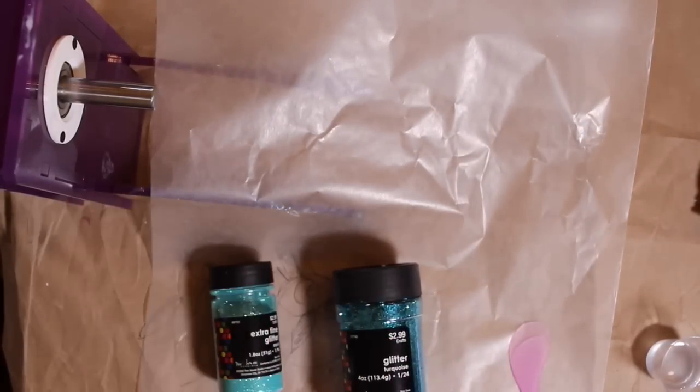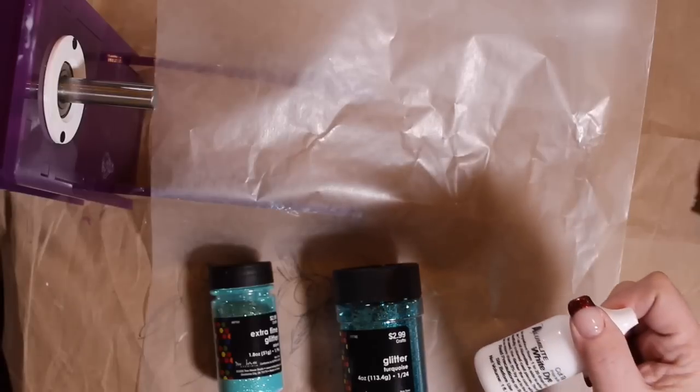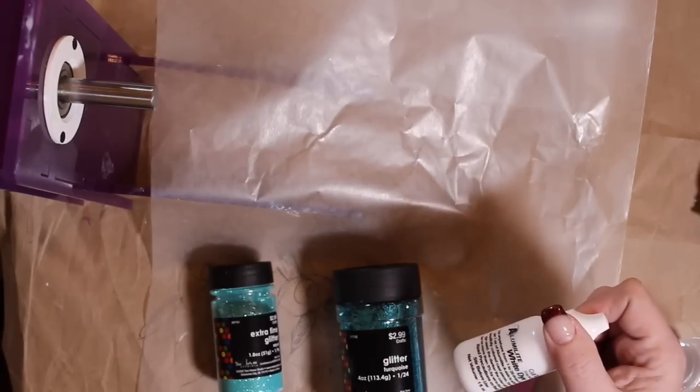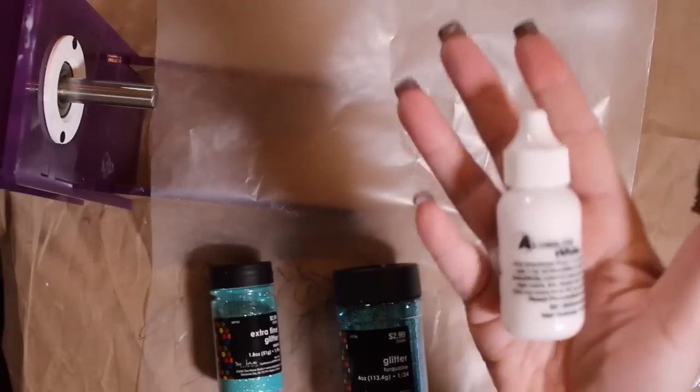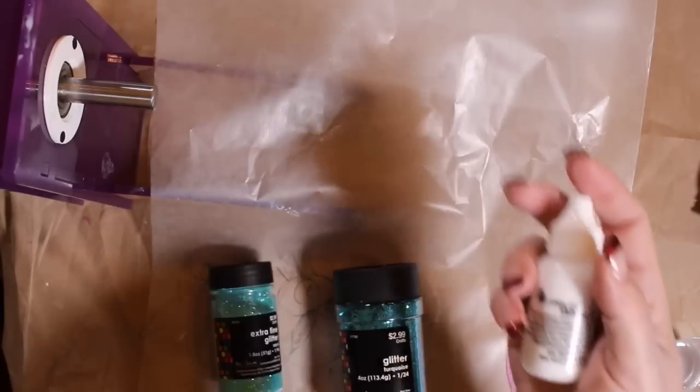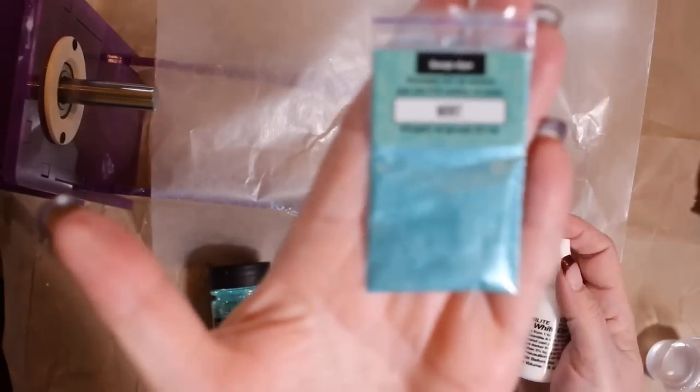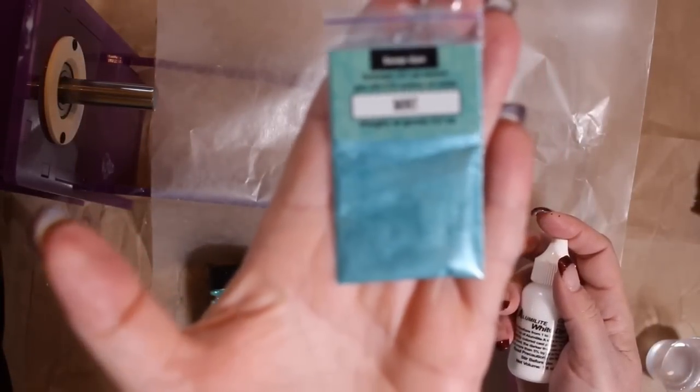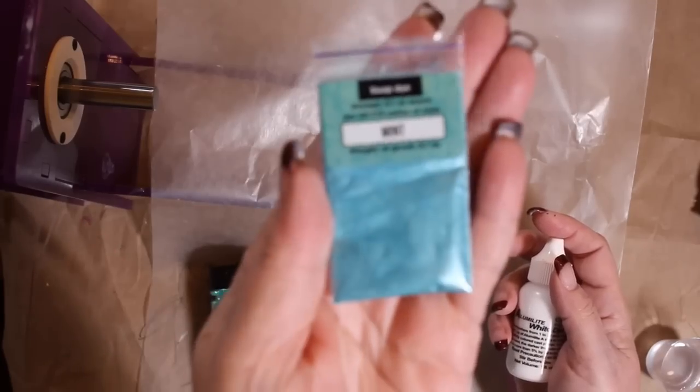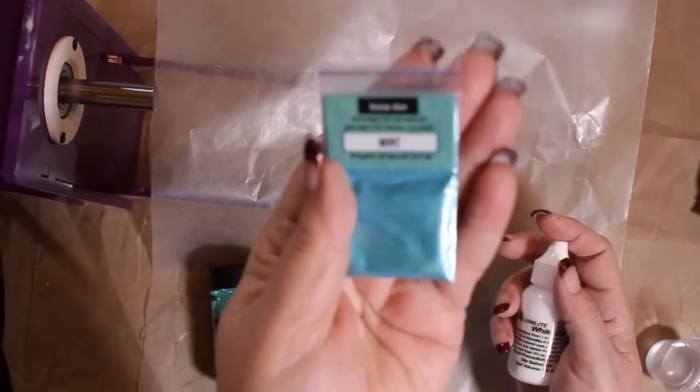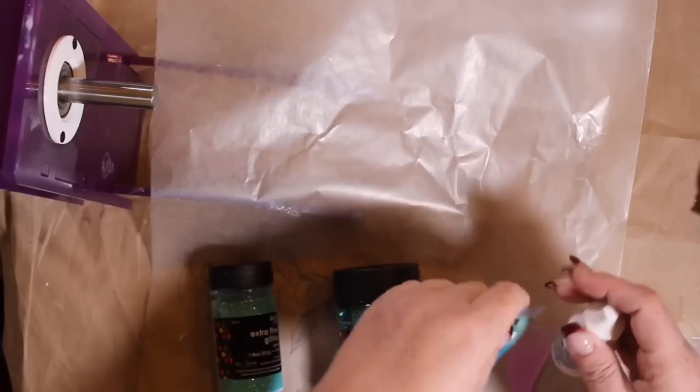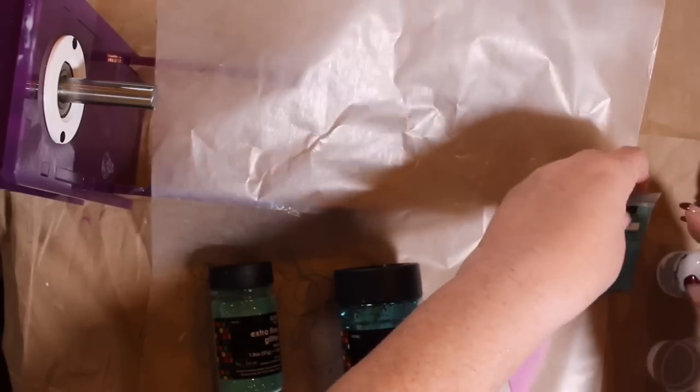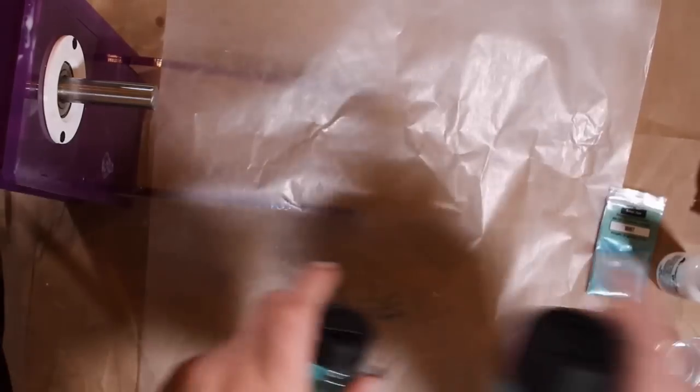So I've got a couple kinds of glitter. I have an Alumilite dye that I can put in my epoxy as you can see, and I have soap dye, little mica dye if you want to call it that, that also can be put in epoxy to provide a color. So I'm going to use these three items to put a coat on a cup.